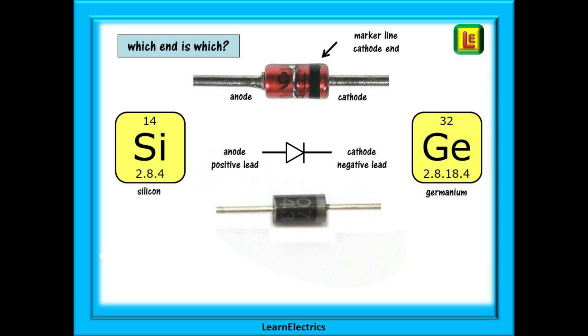The anode is the positive lead and the cathode the negative lead and the symbol for a diode is also shown.